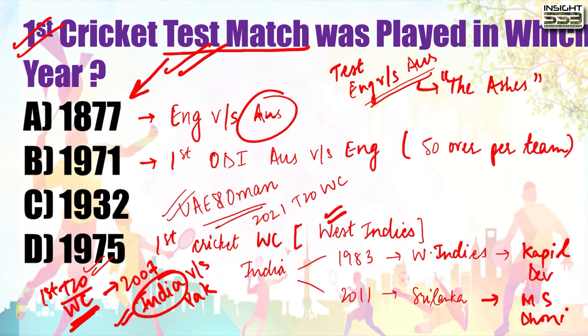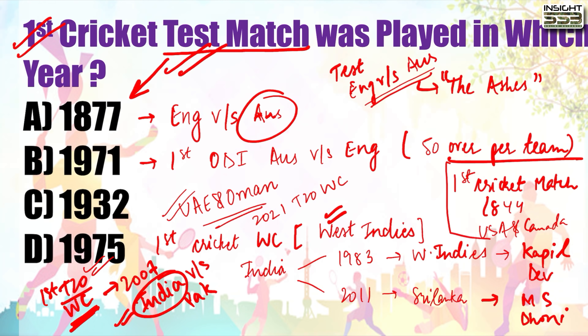If the paper asks when the first cricket match was played, the first known cricket match was played in 1844 between USA and Canada, and it was held in New York. This is also important information.